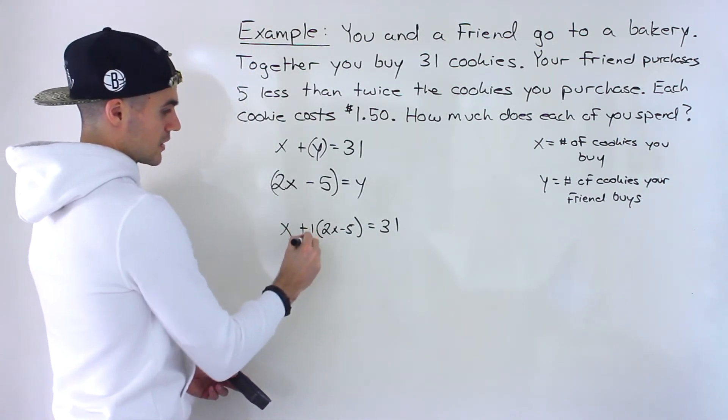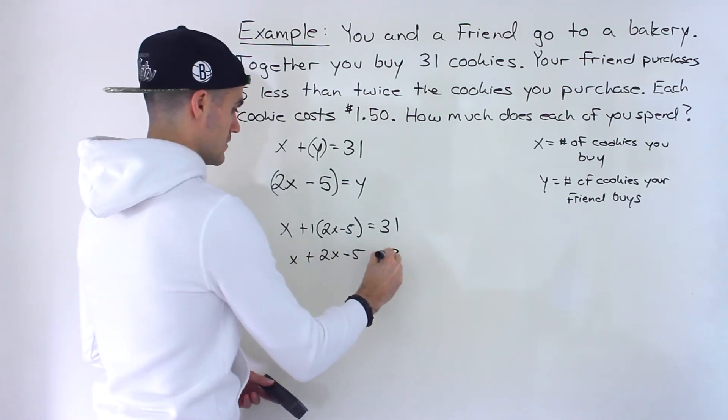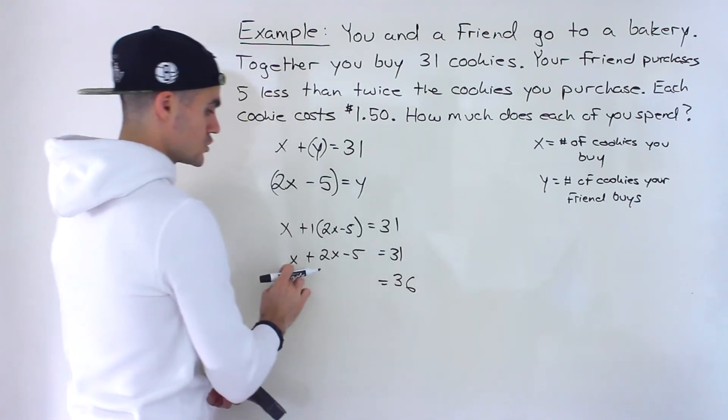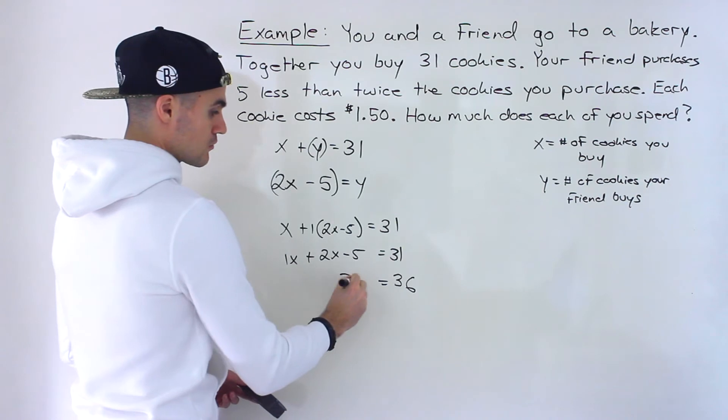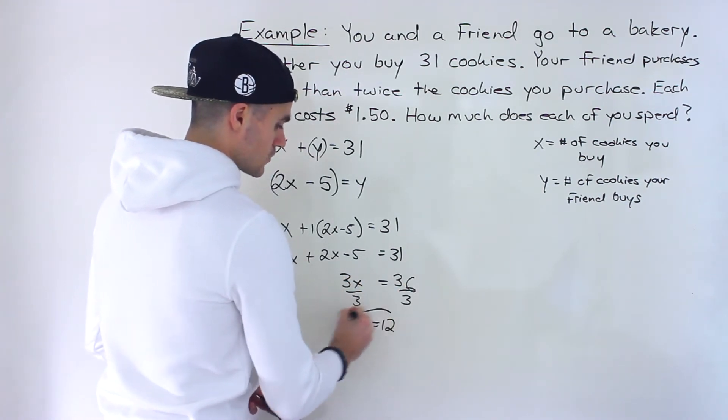So we'd end up, there's like a 1 in front of this bracket. So we could just get rid of the bracket. Bring the negative 5 over. 31 plus 5 would give us 36. x plus 2x, those are like terms. There's like a 1 in front. That would be 3x divided by 3, divided by 3. x would be 12.